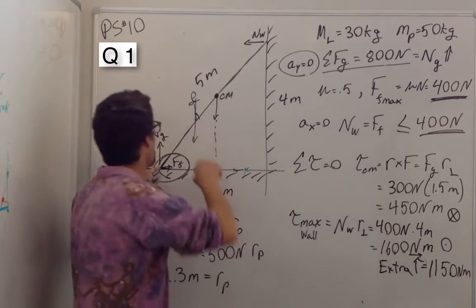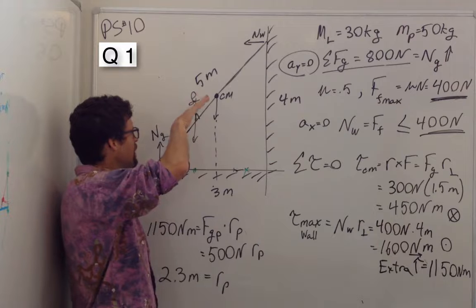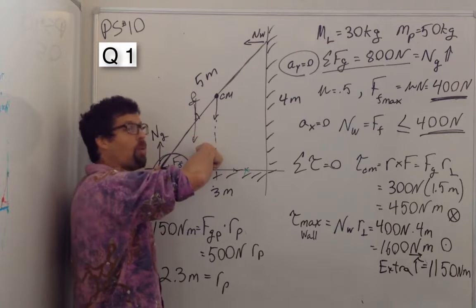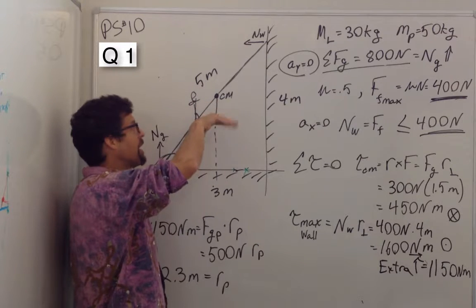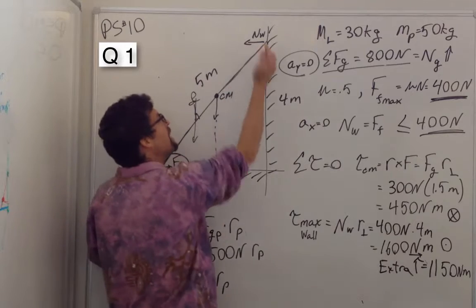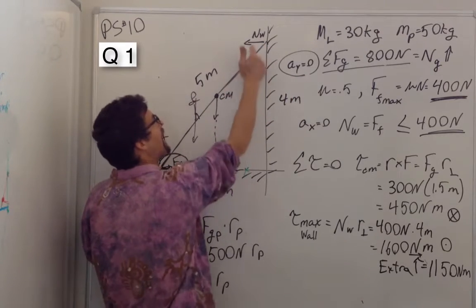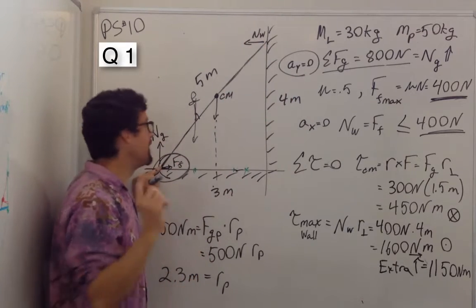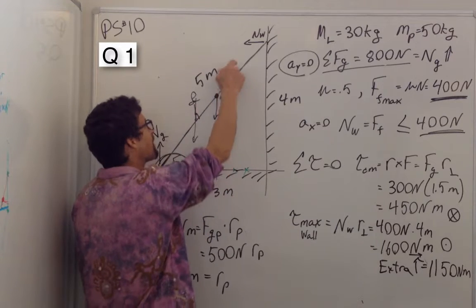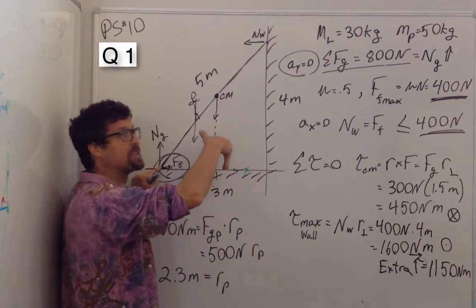So now we look at the torques. Gravity pulling on me provides a torque into the board, but this doesn't accelerate into the board because there's an equal and opposite torque provided by this force. And the key is as I walk up the ladder, the torque I provide on the ladder increases.